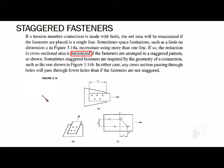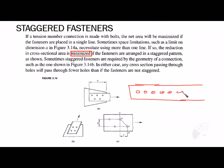In tension member connections made with bolts, the net area will be maximized if the fasteners are placed in a single line. However, if we do not have sufficient length for that arrangement, we make a staggered connection — this is what we call a staggered pattern.